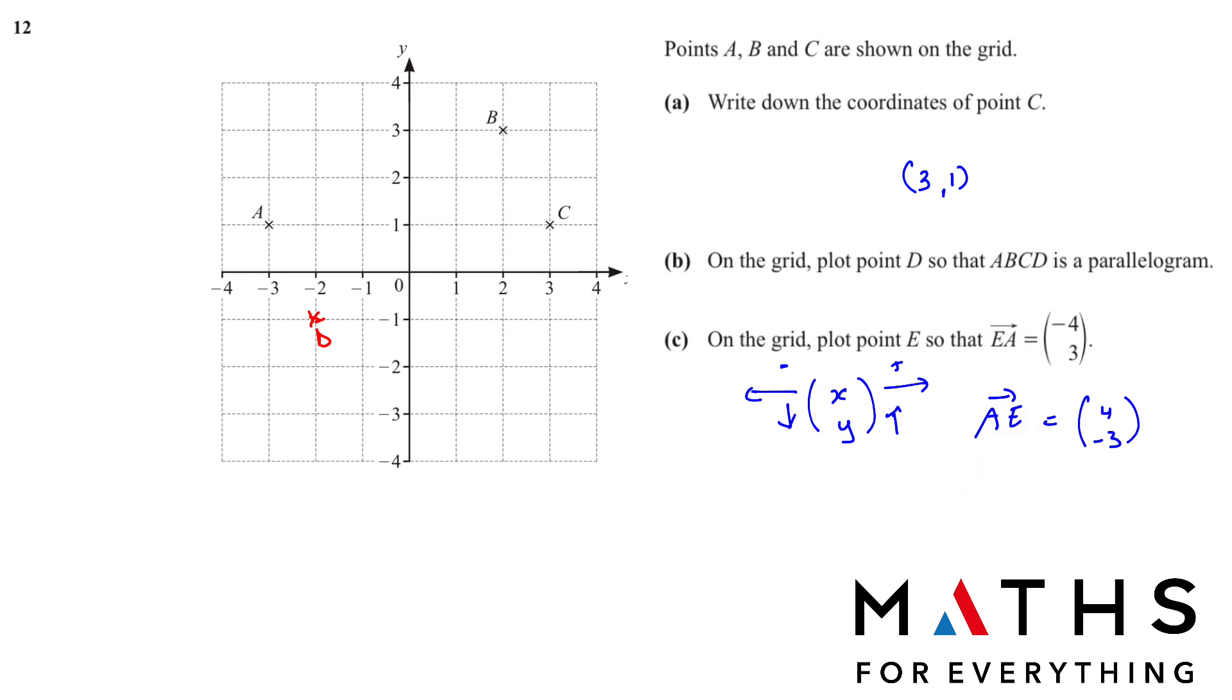From A to E, if I want to go, I will move 4 to the right. Remember positive to the right. So 4 units to the right. 1, 2, 3 and 4. And then negative 3, 3 units down. 1, 2 and 3. This here is our E. Did you understand?